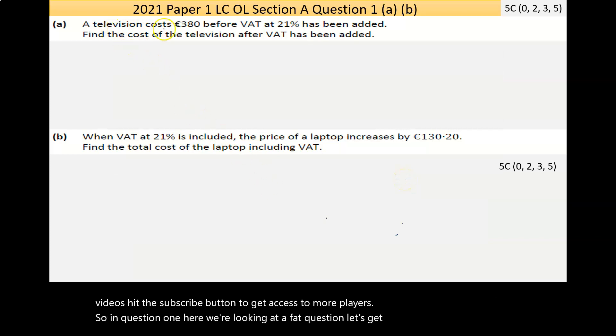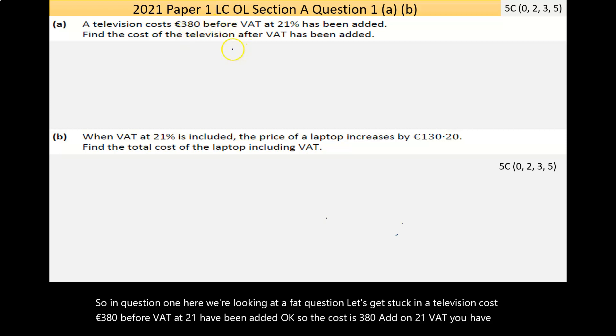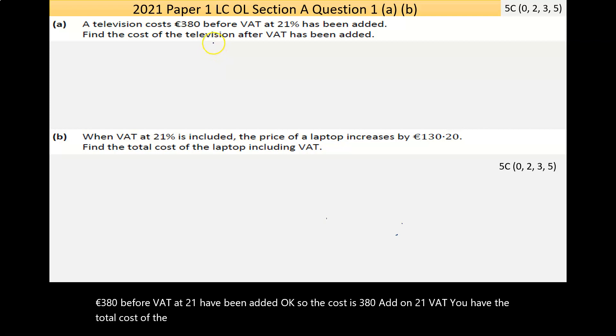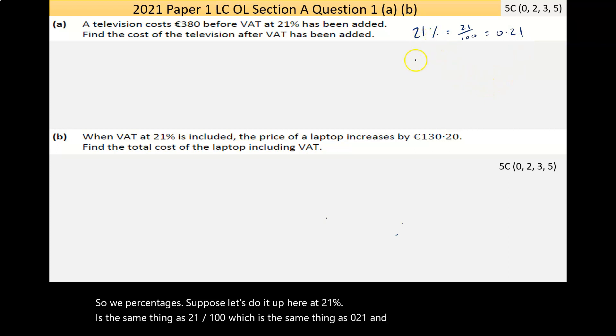A television costs €380 before VAT at 21% has been added. The cost is €380, add on 21% of that, you have the total cost of the television. The question asks: find the cost of television after VAT has been added. With percentages, 21% is the same thing as 21 over 100, which is the same thing as 0.21, and that's the extra amount. The 100% is equal to the €380.